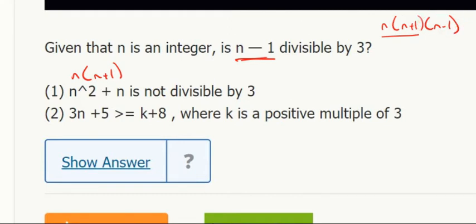Number 1 is saying neither n nor n plus 1 are. So that means it's n minus 1 that must be a multiple of 3. That's sufficient.